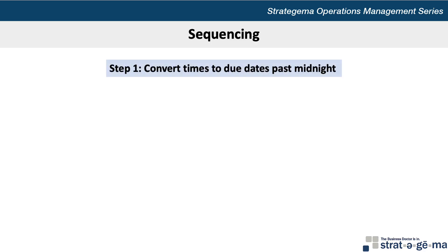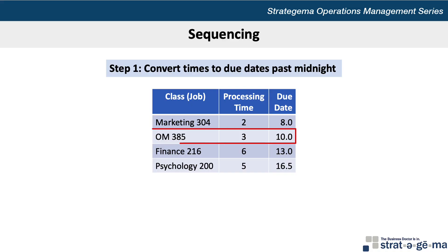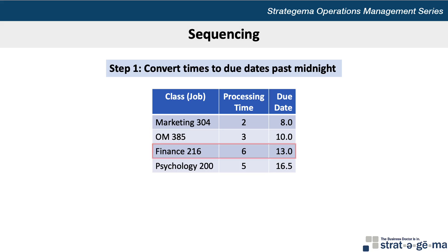The first step is to convert the times to due dates past midnight. Marketing, which is expected to take 2 hours, is due at 8 hours past midnight. OM, which should take 3 hours, is due at 10 hours past midnight. Finance, which should take 6 hours to complete, is due 13 hours past midnight. And psychology, which should take 5 hours, is due at 16.5 hours past midnight.